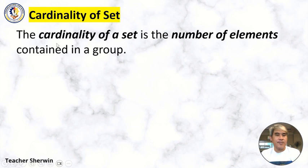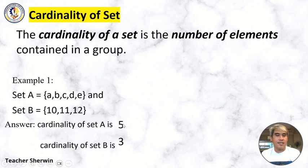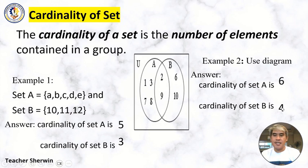Next, Cardinality of Set. The cardinality of a set is the number of elements contained in the group. Set A = {A, B, C, D, E} and Set B = {10, 11, 12}. To get the cardinality of Set A, count the elements: 1, 2, 3, 4, 5 — so the cardinality is 5. For Set B, it is 3. In the diagram, count the elements in the circle for Set A: 1, 2, 3, 4, 5, 6 — cardinality is 6. For Set B: 1, 2, 3, 4 — cardinality is 4.